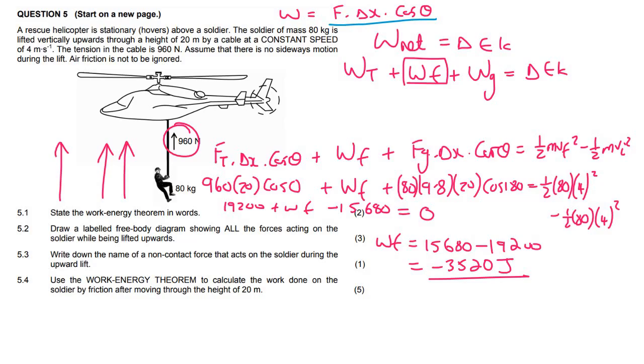You don't say acting down or acting up, because energy doesn't have a direction. It's a scalar. It makes sense that the energy is negative, because friction is always going to try to take energy away from the object.